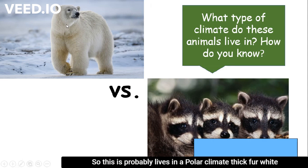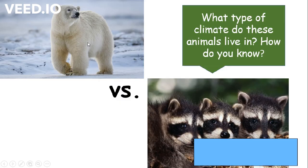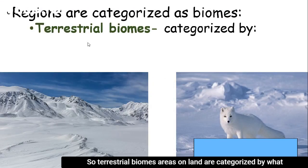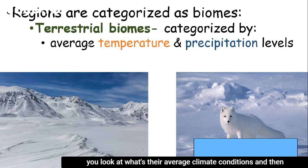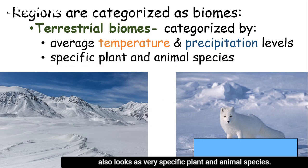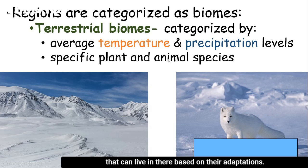Terrestrial biomes — areas on land — are categorized by their average temperature and precipitation levels, essentially their average climate conditions, as well as by their very specific plant and animal species. Depending on what climate zone you live in, that determines your average temperature and precipitation level, which in turn determines the specific plant and animal species that can live there based on their adaptations.